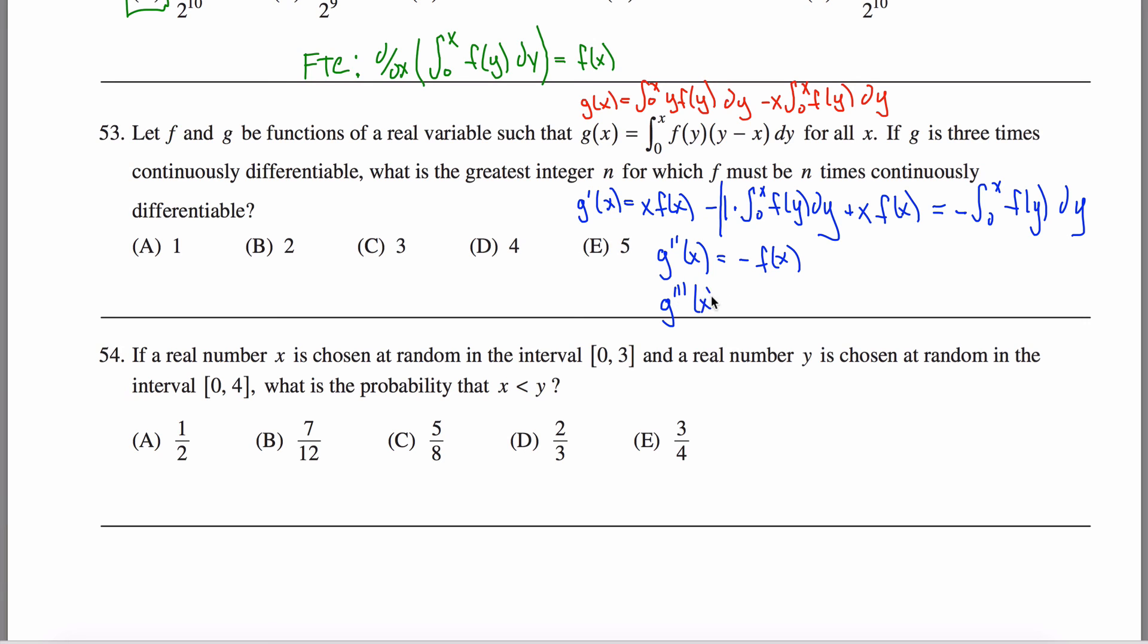What's the third derivative? Well, the derivative of negative, I can pull that out in front, ignore that. The derivative of f of x is f prime of x. What this is saying is the third derivative of g is just equal to the negative of the first derivative of f. How does that answer the question? Well, if g is three times continuously differentiable, if g triple prime of x exists, what is the greatest integer n for which f must be n times continuously differentiable? f prime of x must exist because it's equal to this thing which exists. f double prime of x doesn't need to exist, but f prime of x does need to exist in order for the negative of that to be the same as this. So f must be differentiable at least one time. So the answer to this question would be one.